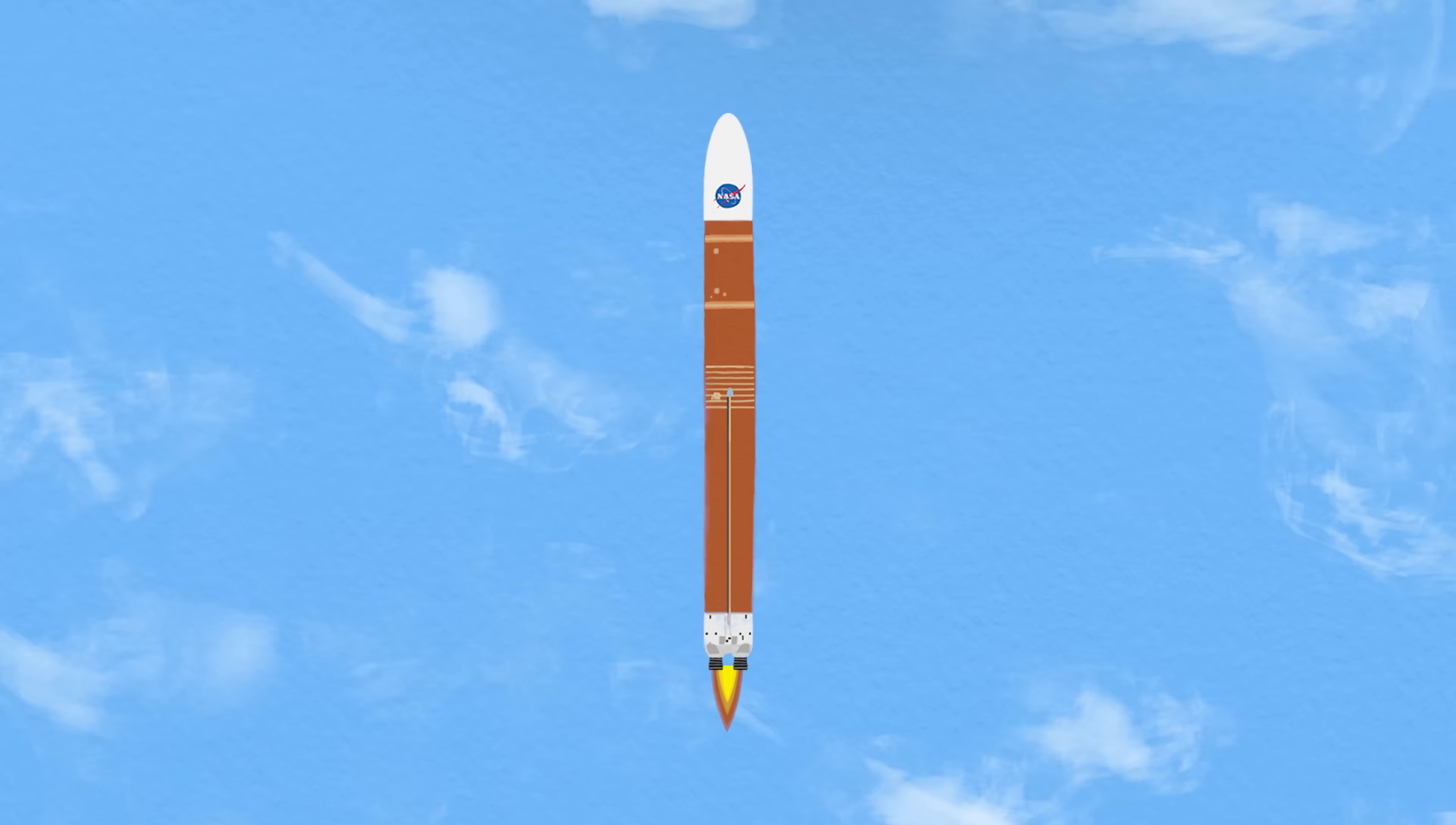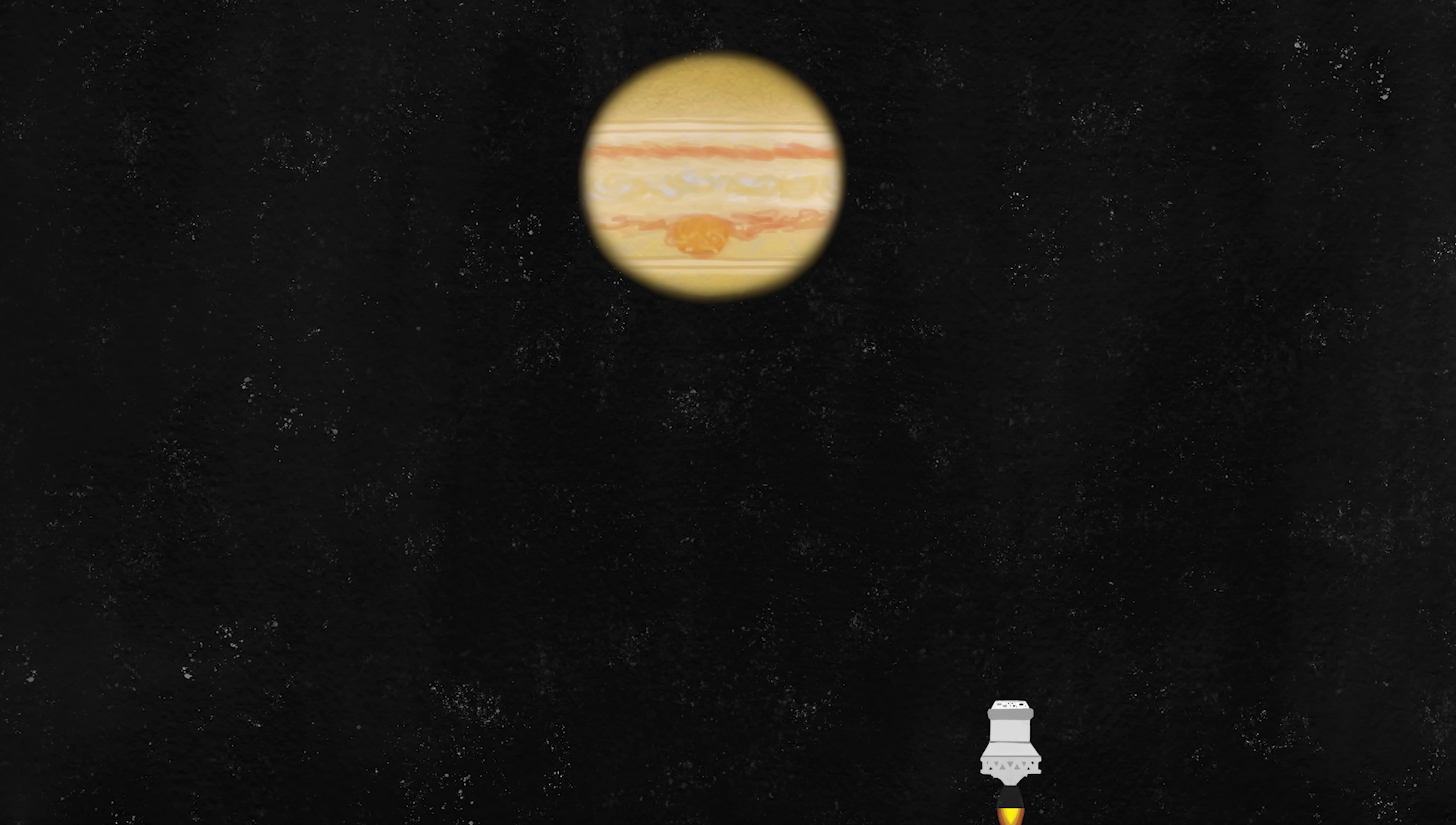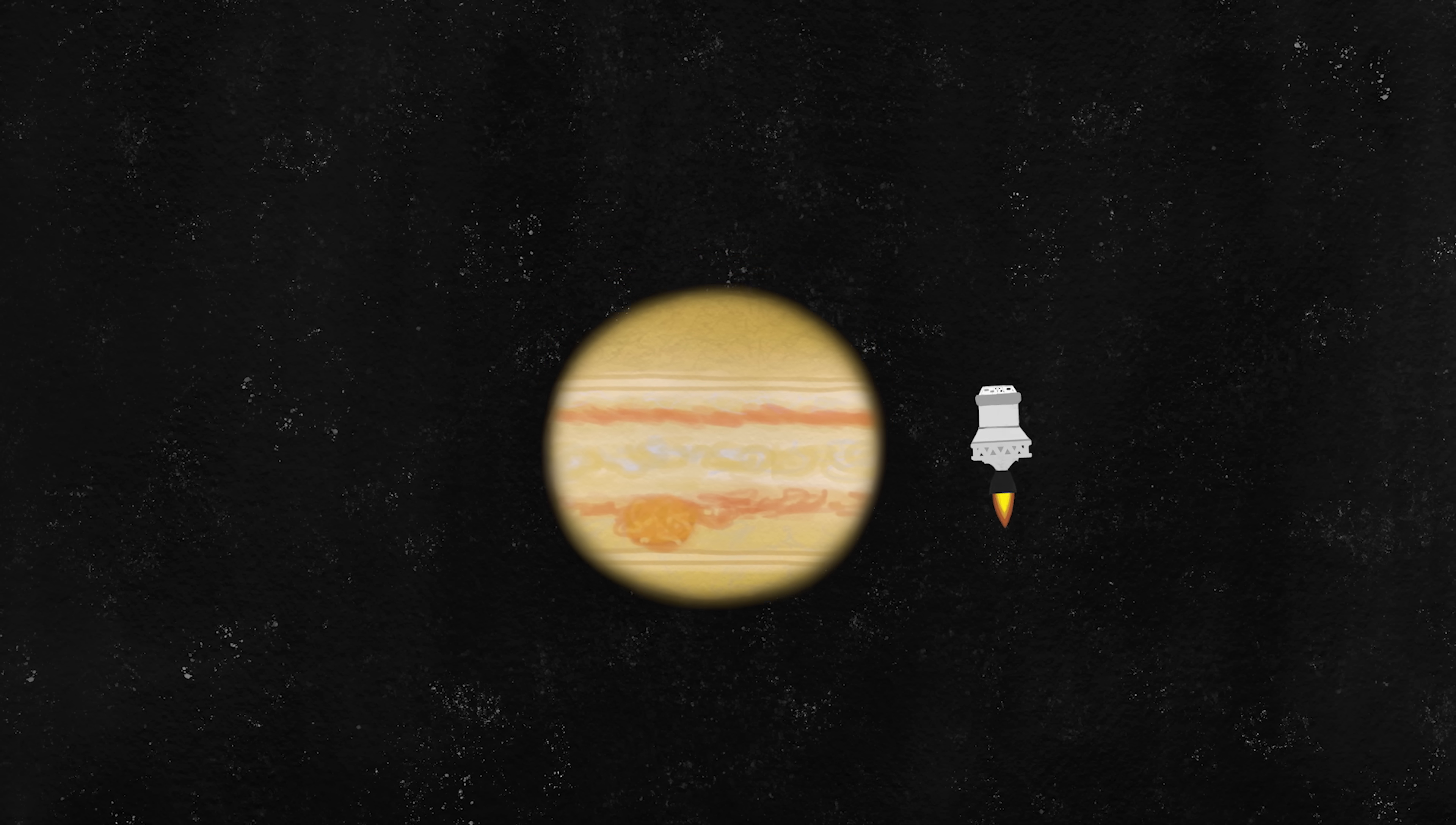Using the currently in development SLS rocket as the launch vehicle, the spacecraft can get to Jupiter within six months. It can use a gravity assist at Jupiter, slingshotting the spacecraft towards the sun.